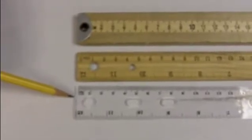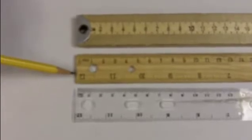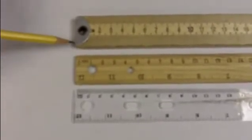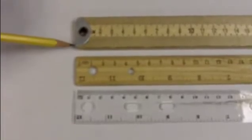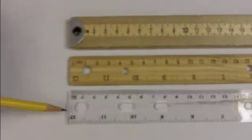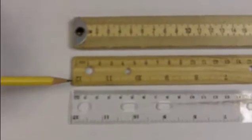First thing you'll notice is there are different thicknesses. The plastic ruler is the thinnest, then the wood ruler, then the meter stick. The thicker the ruler, the more error you'll have while viewing it.